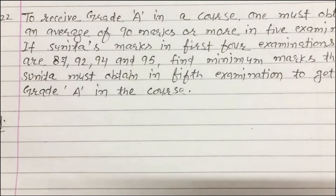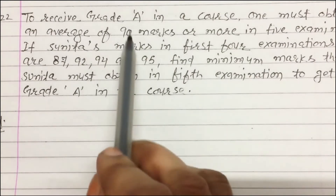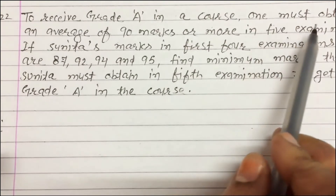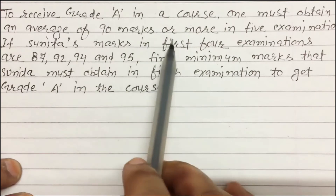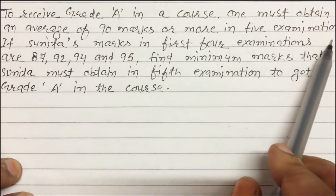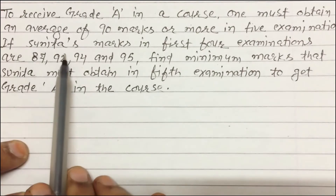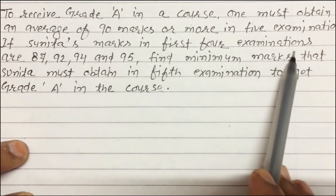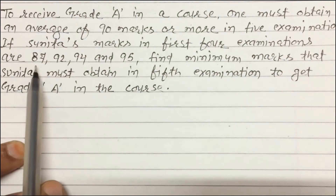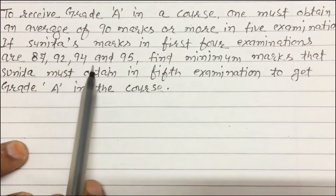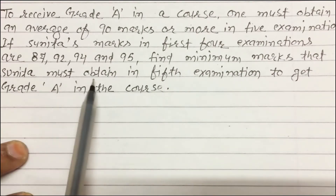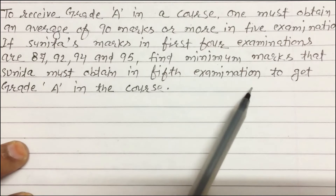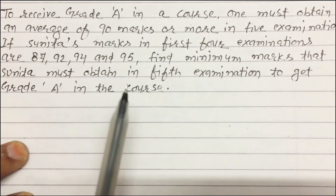Let's start the next question — question number 22. To receive grade A in a course, one must obtain an average of 90 marks or more in 5 examinations. Sunita's marks in the first 4 examinations are 87, 92, 94, and 95. Find the minimum marks that Sunita must obtain in the 5th examination to get grade A.